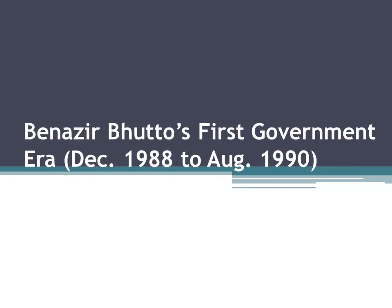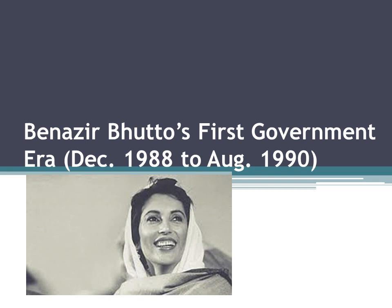Coming to the topic of Benazir Bhutto's first government era, which was from December 1988 to August 1990. She was a charismatic woman — the first ever lady to win elections and take an oath as Prime Minister of Pakistan in a modern Muslim state. Although she inherited her father's party, the Pakistan People's Party, and was a beneficiary of dynastic politics and the emotional ties of a large section of the electorate to her charismatic family, this proved to be a mixed political blessing. The party won a narrow plurality in the 1988 elections and was therefore forced to enter into a coalition with the MQM and several other parties in order to form a government.